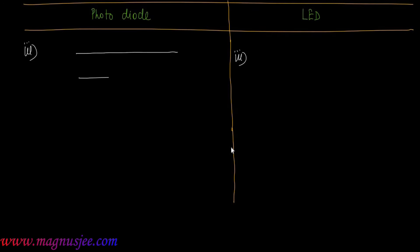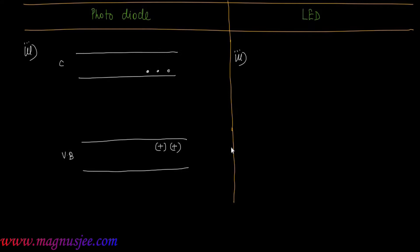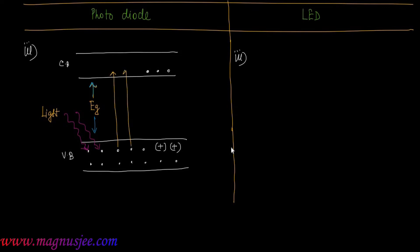For the photodiode, we can draw the energy band diagram with a conduction band and valence band. In the conduction band we have conduction electrons, and in the valence band we have holes and valence electrons. The forbidden energy gap is E_g. When light is incident on this reverse biased p-n junction diode, valence electrons move from the valence band to the conduction band, and the number of conduction electrons in the conduction band increases.